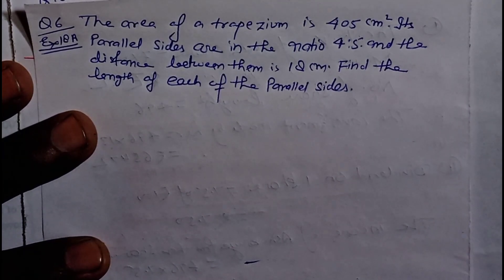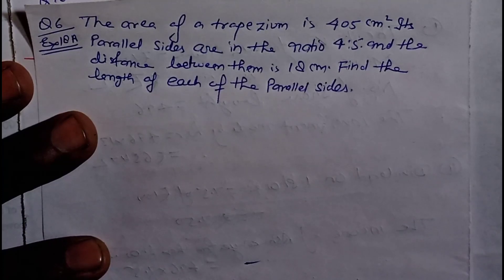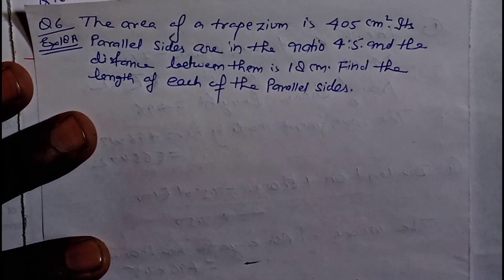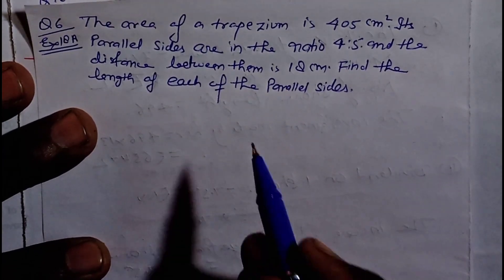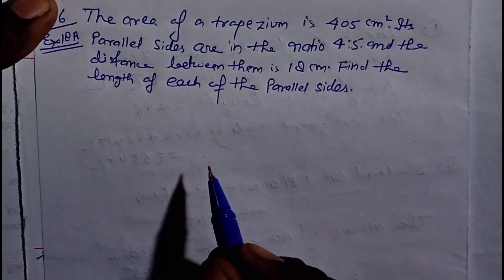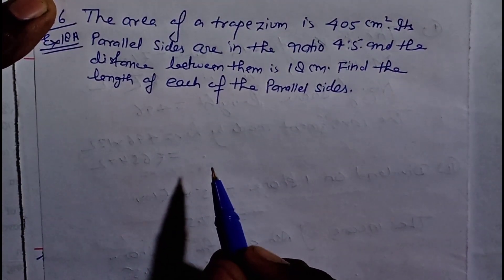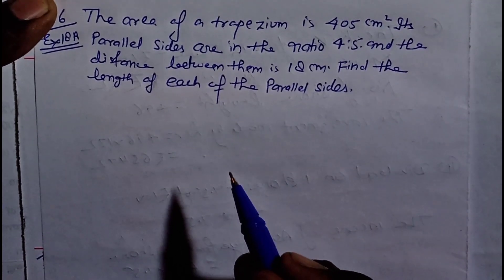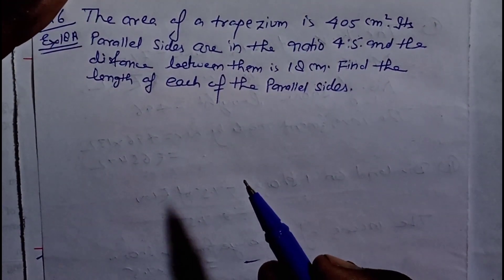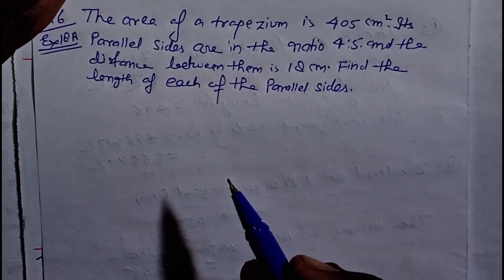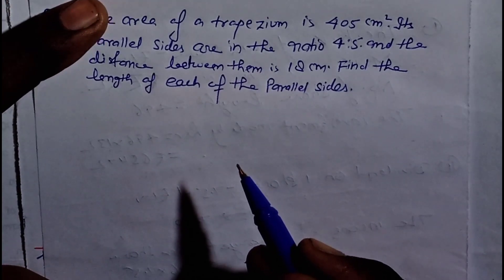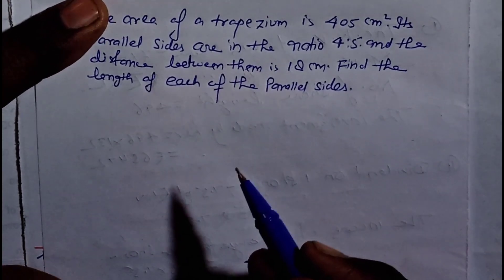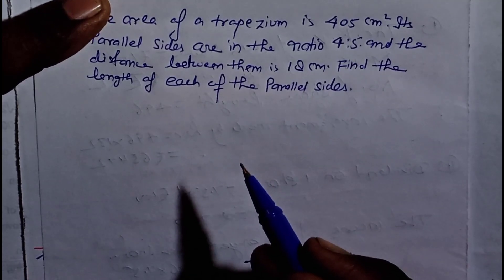And the distance between them is 18 cm. Find the length of each of the parallel sides. Question ko start karne se pehle ek request hai ki please questions ko bahut ache se samjhe, bahut ache se karein. Aap ki samajh mein zarur aayega aur aap doosron ko batane ke kaabil ban jayenge.